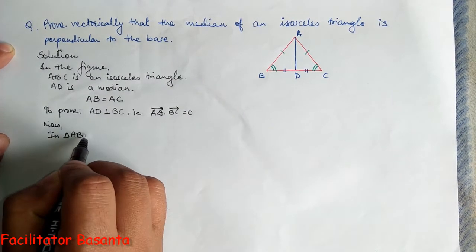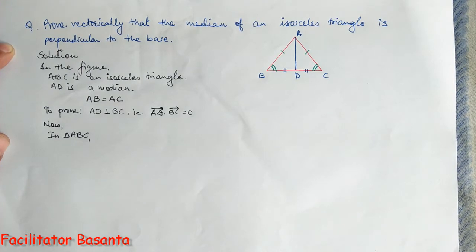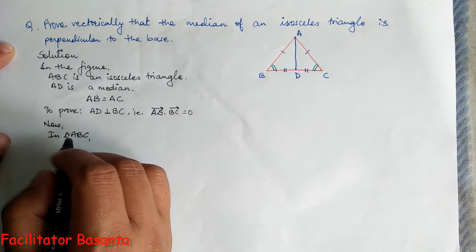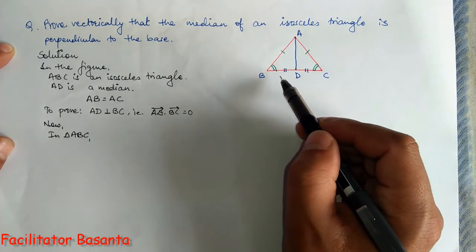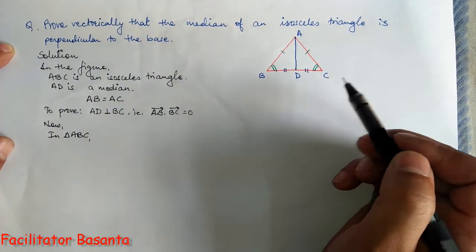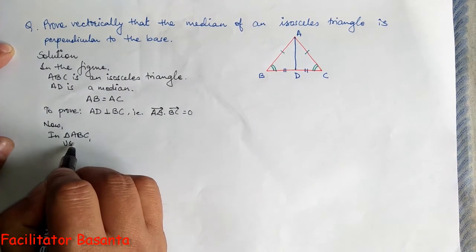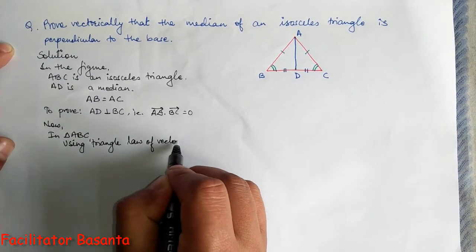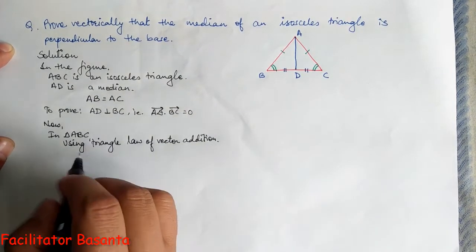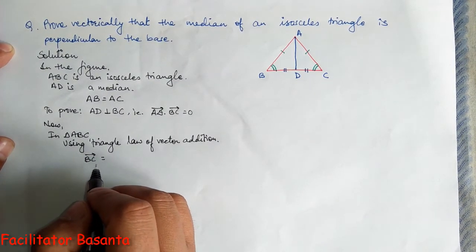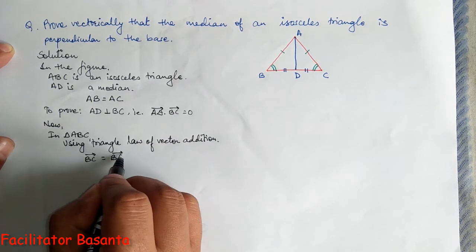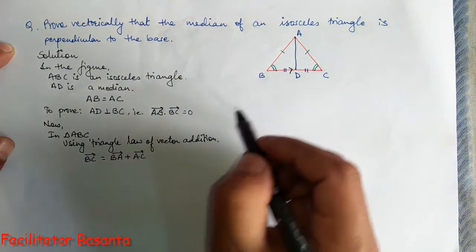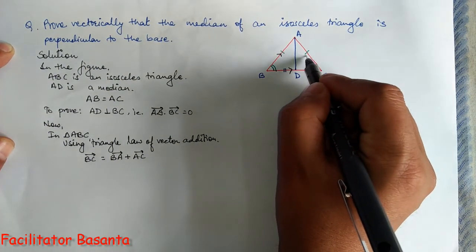In triangle ABC, we first apply the triangle law of vector addition, and then the midpoint theorem. Using the triangle law of vector addition, BC vector equals BA vector plus AC vector - the direction being B to A, and then A to C.